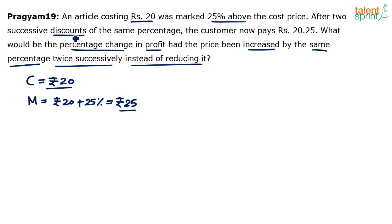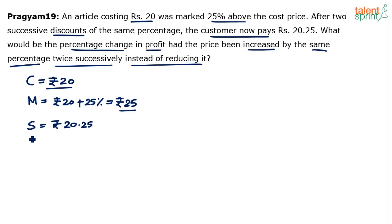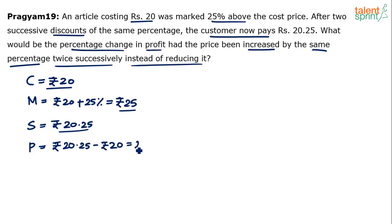Now there were two successive discounts of the same percentage, and the customer pays Rs.20.25 — that is the selling price. Marked price is 25, cost price is 20, selling price is 20.25. Profit is selling price minus cost price: 20.25 minus 20 equals 0.25, which is 25 paisa.